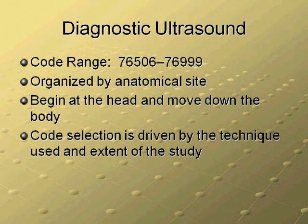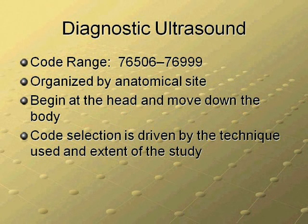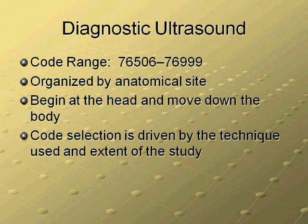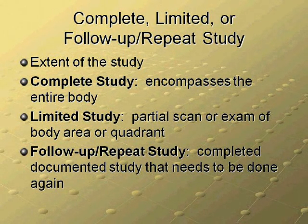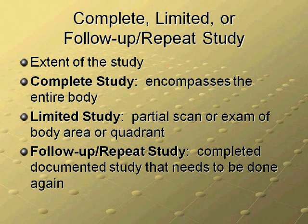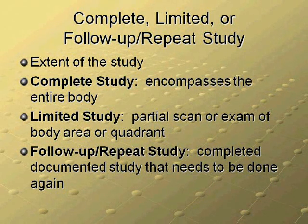Diagnostic ultrasound uses high-frequency sound waves to image anatomical structures and to detect the causes of illness and disease. Ultrasounds are divided on the basis of anatomic location, as is the diagnostic radiology subsection. Code selection is driven by the technique used and the extent of the study. Always code to the furthest extent of the study being performed. Complete means the entire body is scanned. Limited indicates that only part of the body is scanned, for example one organ. And follow-up or repeat means that a limited study of a body part was scanned previously and will need to be done again.